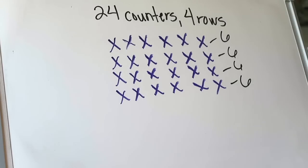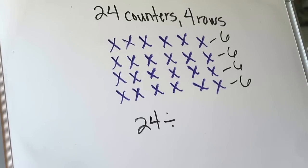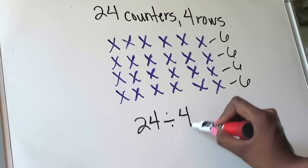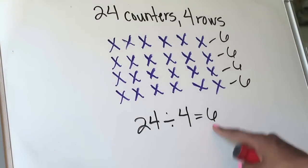Now let's push ourselves a little bit more with this particular example. If I had to write a division sentence to represent this array — what I've done when I've taken 24 counters and arranged them into four equal rows — I ask myself: how many counters did I start with? I started with a total of 24 counters. How many rows did I divide them into, or how many equal groups was I told to create? I needed to create four rows, representing four equal groups. And I know that I had six in each of those equal groups. So 24 divided by four equals six.